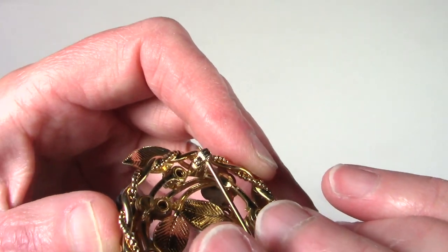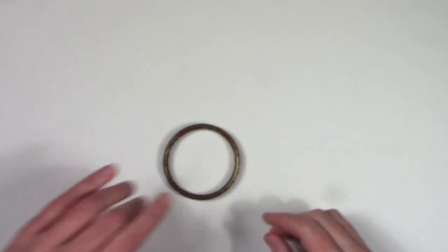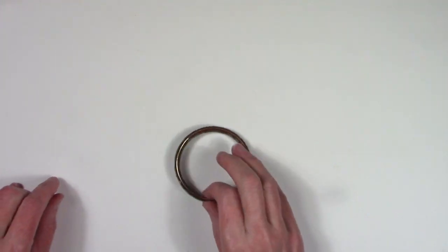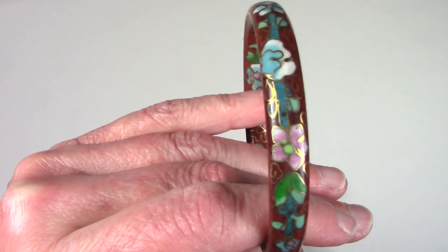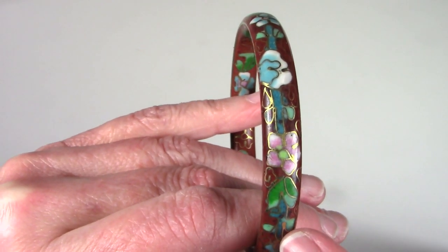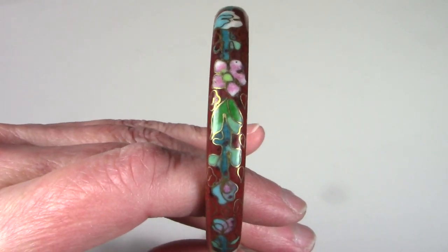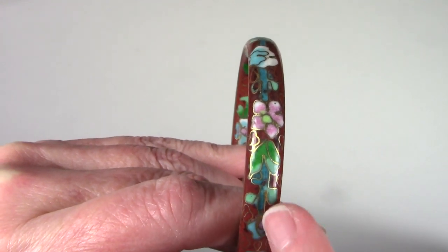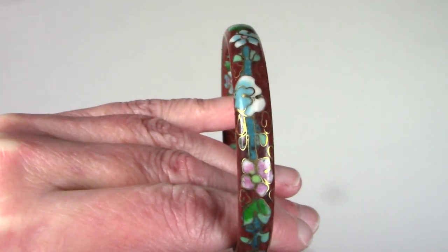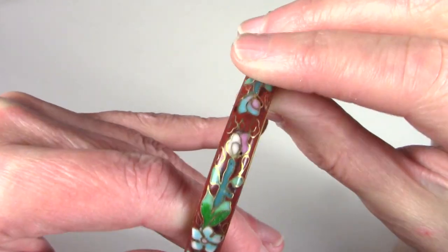Oh yes, this is really nice. So this is cloisonné. It's a technique of creating a design with these gold-tone lines—they can be different colors too—and then you fill in with enamel between the gold-tone lines with different colors. There are different types of cloisonné, so if you watch videos on it, it will help you understand the process.